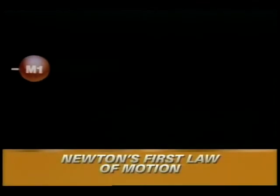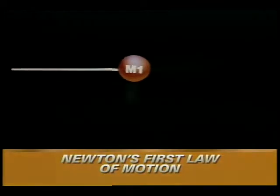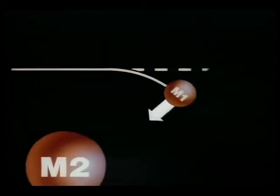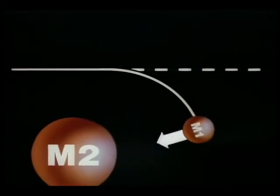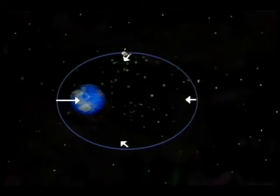Newton's first law of motion: a body in motion will keep moving in the same speed and in the same direction, unless acted upon by an external force. A satellite moves in a curved path around the earth, because the earth's gravitational pull acts as an external force on it.